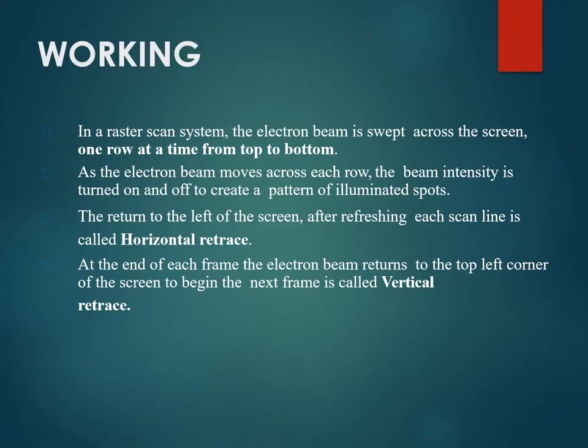Now let's discuss the working of a raster scan system. In a raster scan system, the electron beam is swept across the screen one row at a time, from top to bottom. As the electron beam moves across each row, the beam intensity is turned on and off, creating a pattern of illuminated spots.